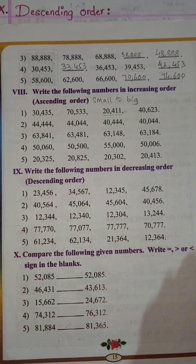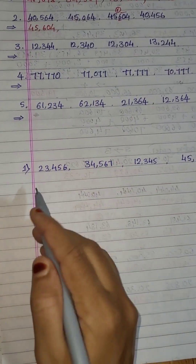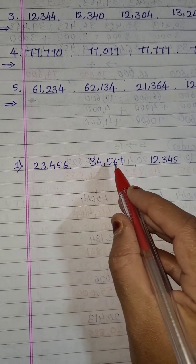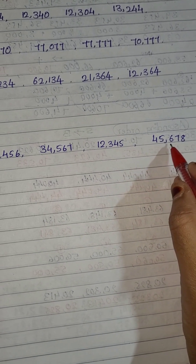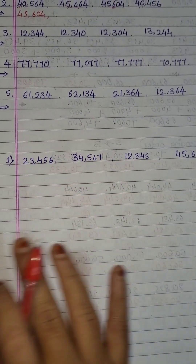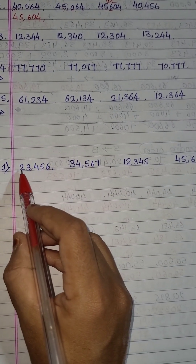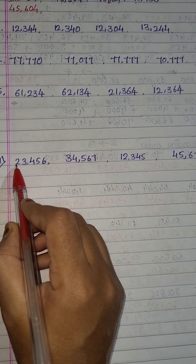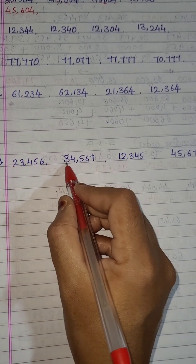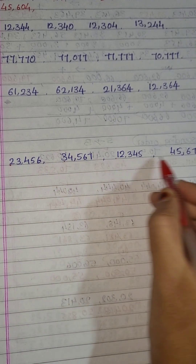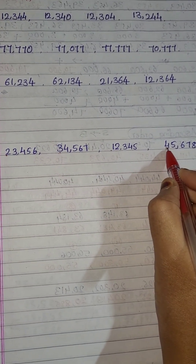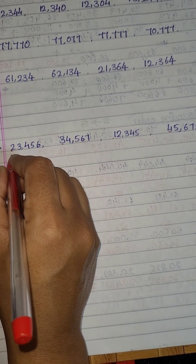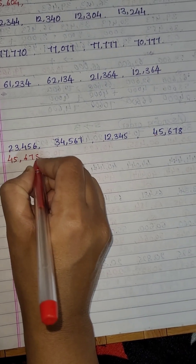Here I will show you the same example I have written. So here we are having: 23,456; 34,567; 12,345; 45,678. You have to apply the same method — always start finding the numbers from the highest place. Here you can easily recognize which is the biggest number. 4 is the biggest digit, so 45,678 is the biggest number.